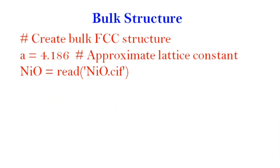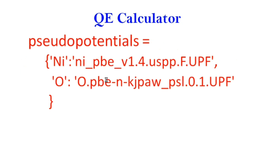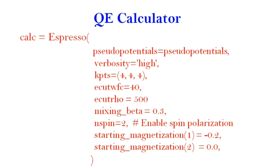To create a structure, I will use a lattice parameter a = 4.186 Å as the lattice constant and create one object 'nio' which reads the NiO structure in CIF format. Next I will define the pseudopotential — I am going to use an ultrasoft pseudopotential for the calculation.